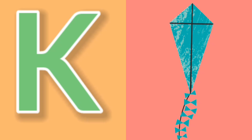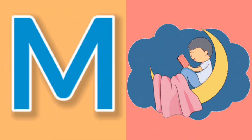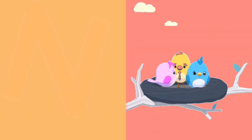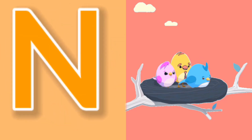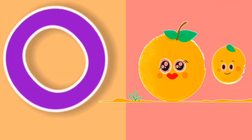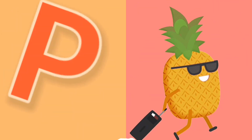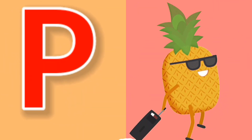K for kite, L for leaf, M for moon, N for nest, O for orange, P for pineapple.